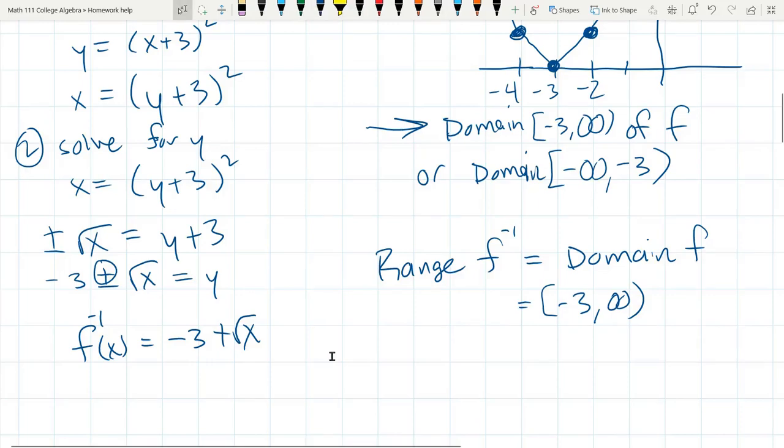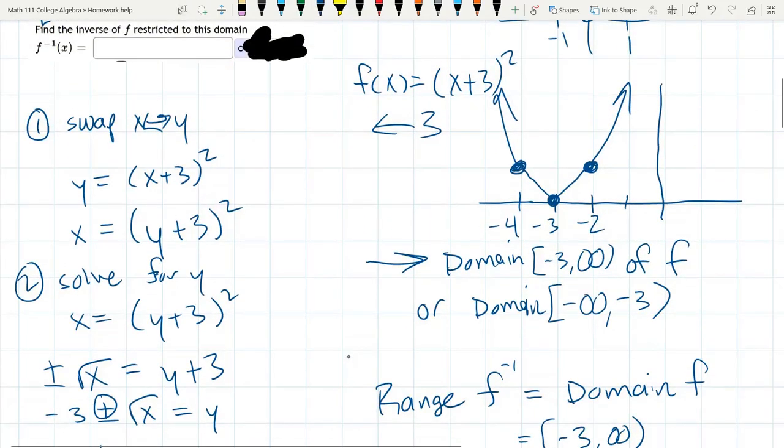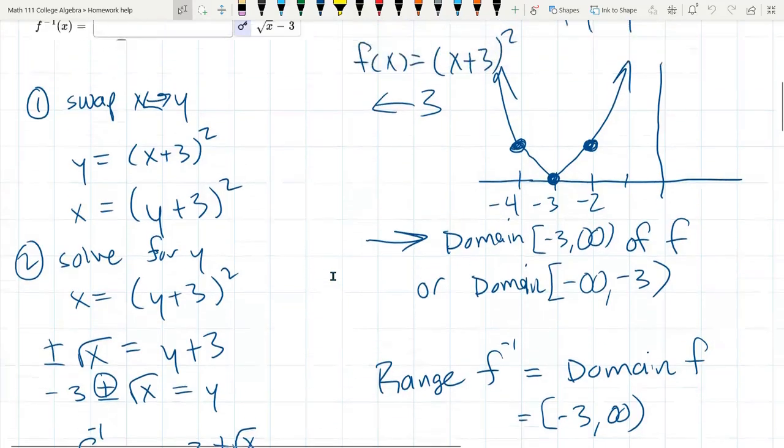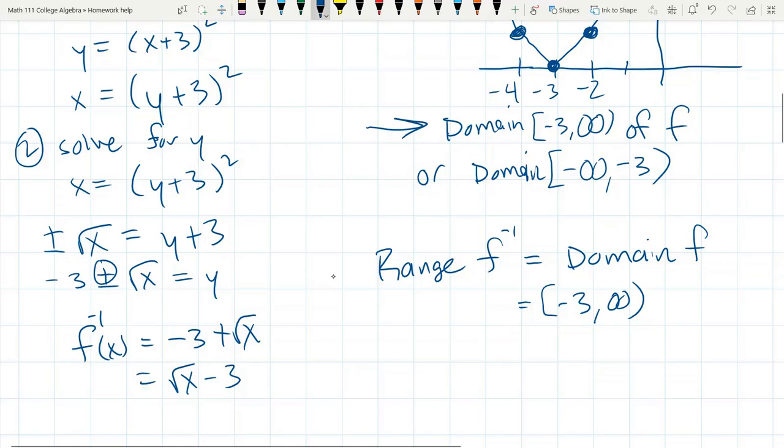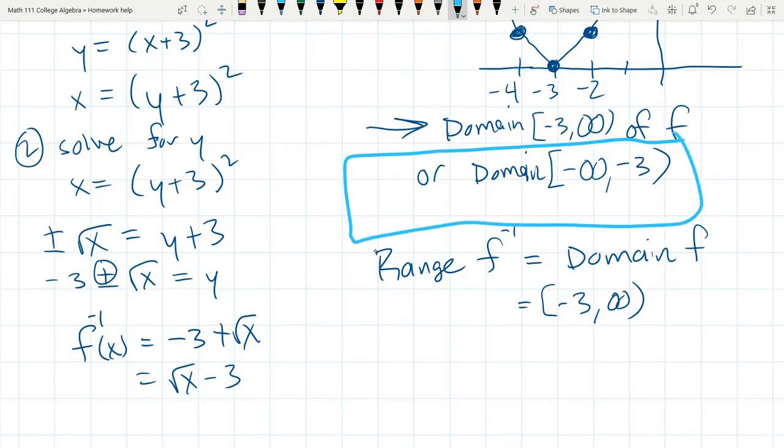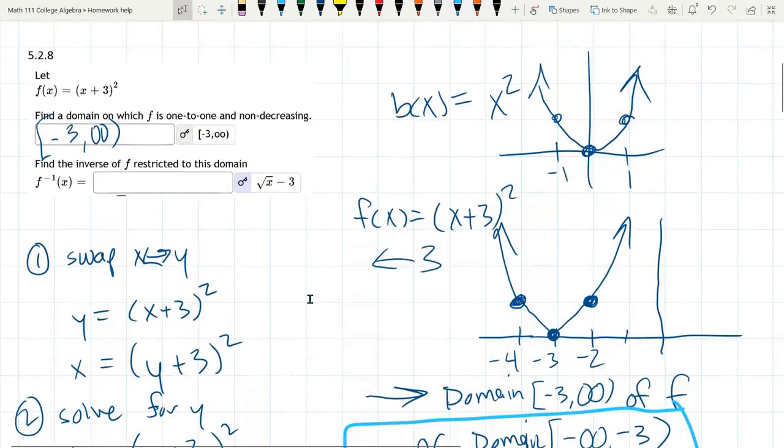Let's go ahead and reveal that answer. That's the f inverse right there. They wrote it in the other order, but that's totally fine. They just put √x - 3. It doesn't matter. It should accept it either way. If I would have made the other choice right here, I would have chosen the minus, and I would have had f inverse -3 - √x. So that would have been the other choice. Either one would be correct. I believe either one should be marked correct by this particular question.